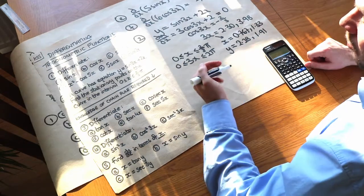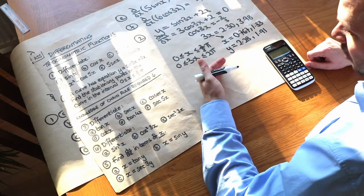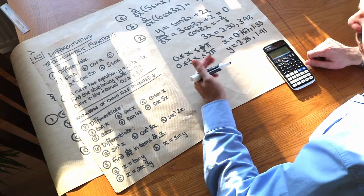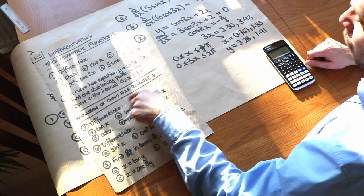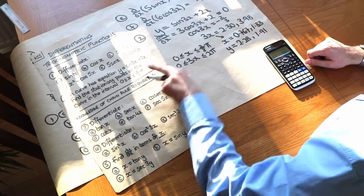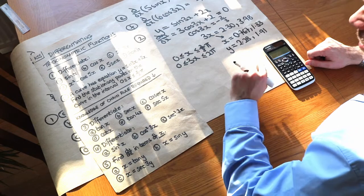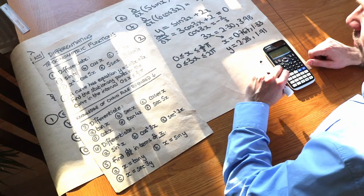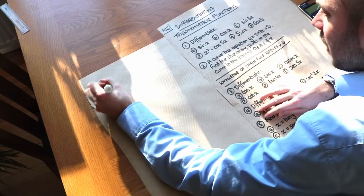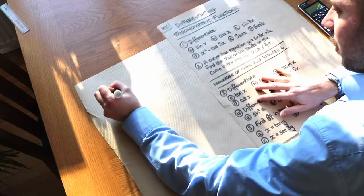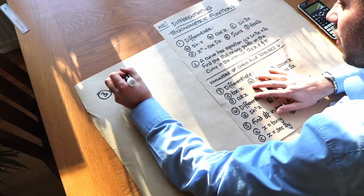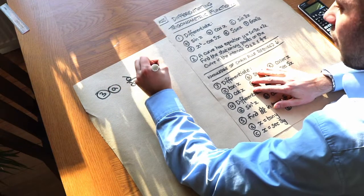If you haven't seen my chain rule video or studied the chain rule separately, I recommend you stop this video, go watch that first, and then come back, because I will assume you know this rule. Now let's differentiate the other trig functions, starting with tan of x.